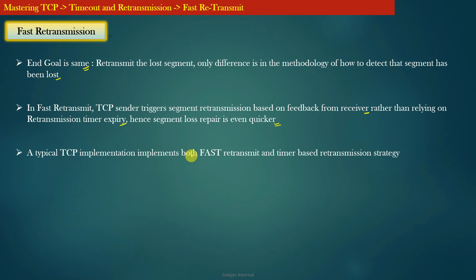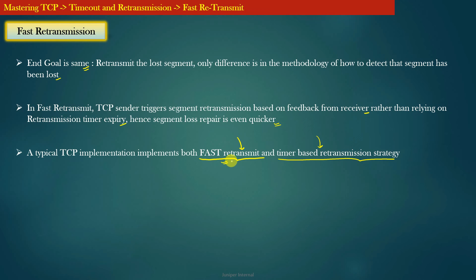A typical TCP implementation implements both the fast retransmission scheme as well as timer-based retransmission. Fast retransmission is not a substitution for timer-based retransmission — both have their own pros and cons. In fact, fast retransmission is possible only when certain special conditions arise; otherwise, the TCP sender has to rely only on timer-based retransmission.